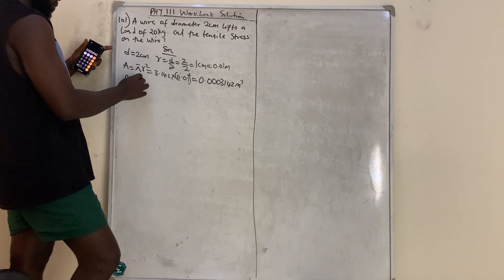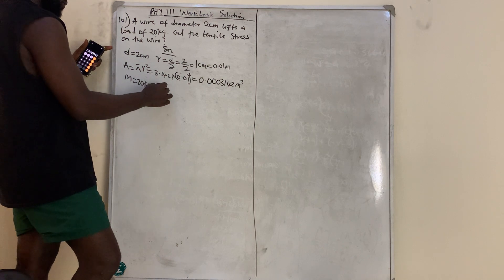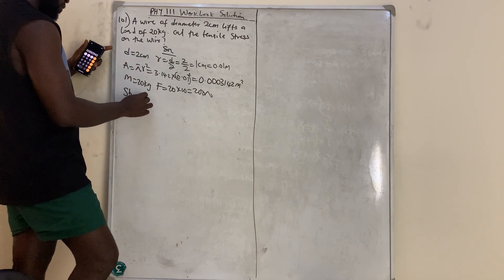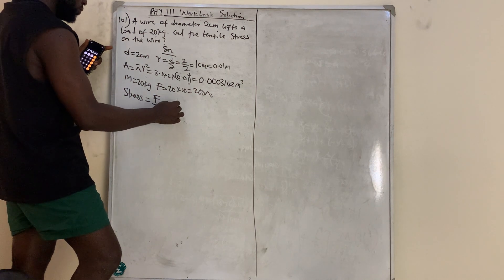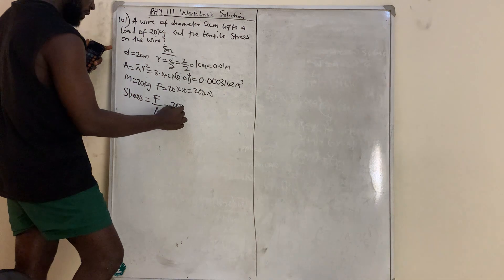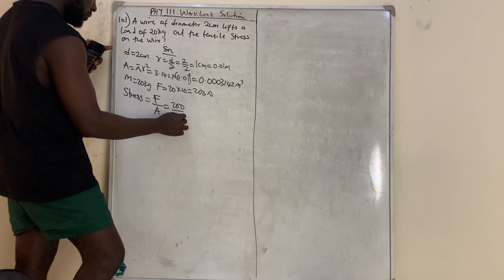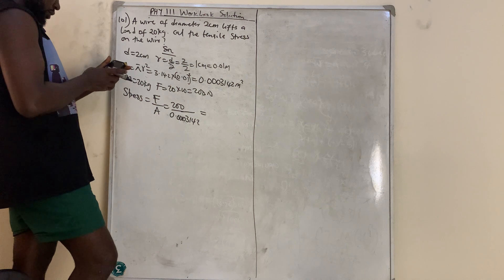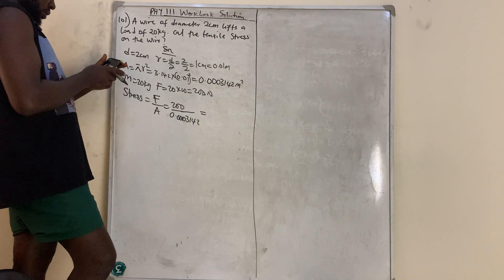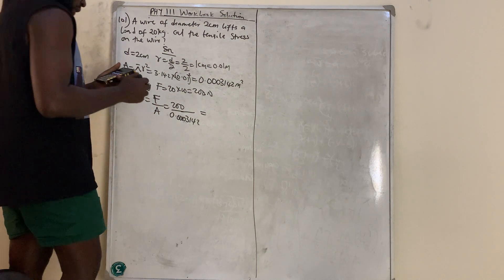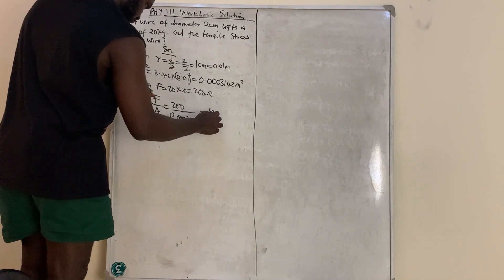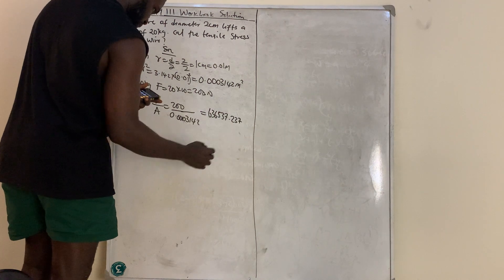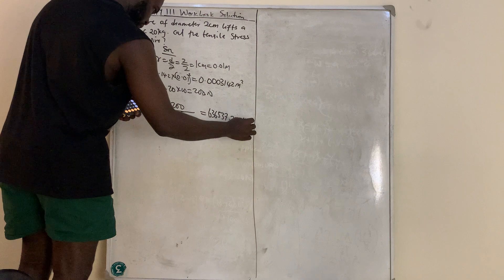They gave us mass = 20 kg, so force = 20 × 10 = 200 N. Stress = force / area = 200 / 0.0003142 = 636,537.237 N/m². You can use your calculator to verify.